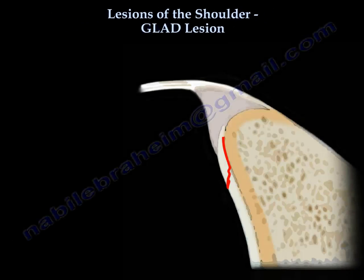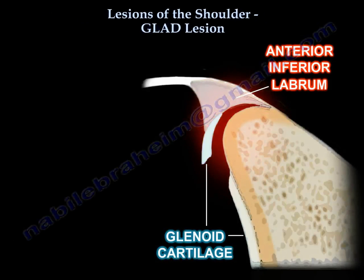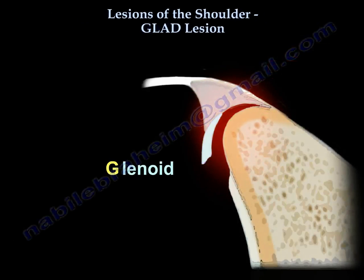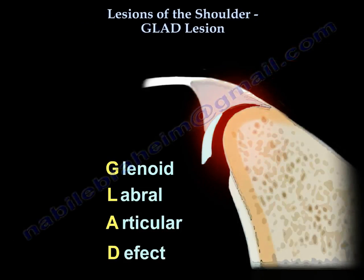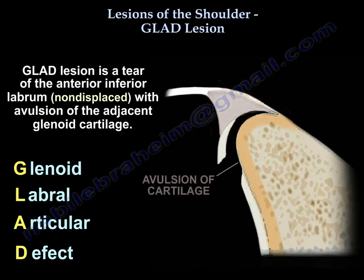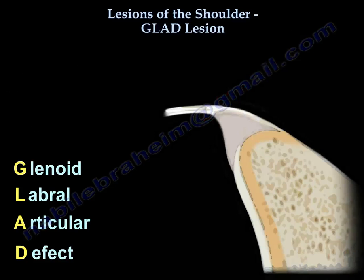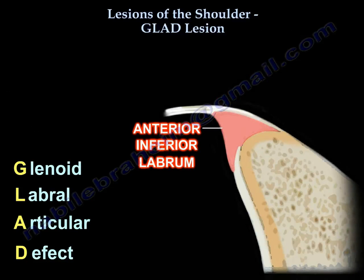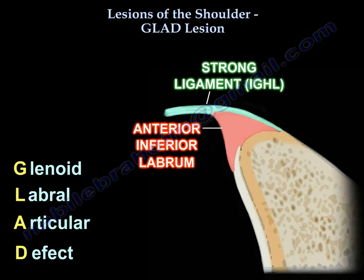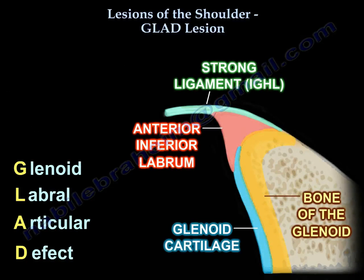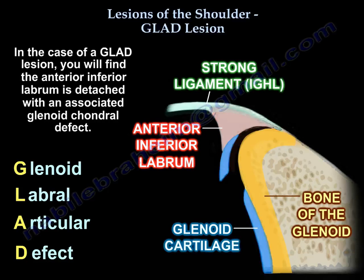The GLAD lesion — Glenoid Labral Articular Defect — is a tear of the anterior inferior labrum that is non-displaced, with avulsion of the adjacent glenoid cartilage. This diagram shows the anterior inferior labrum, the inferior glenohumeral ligament, the glenoid cartilage, and the bone of the glenoid. In a GLAD lesion, you find the anterior inferior labrum detached with an associated glenoid cartilage defect.